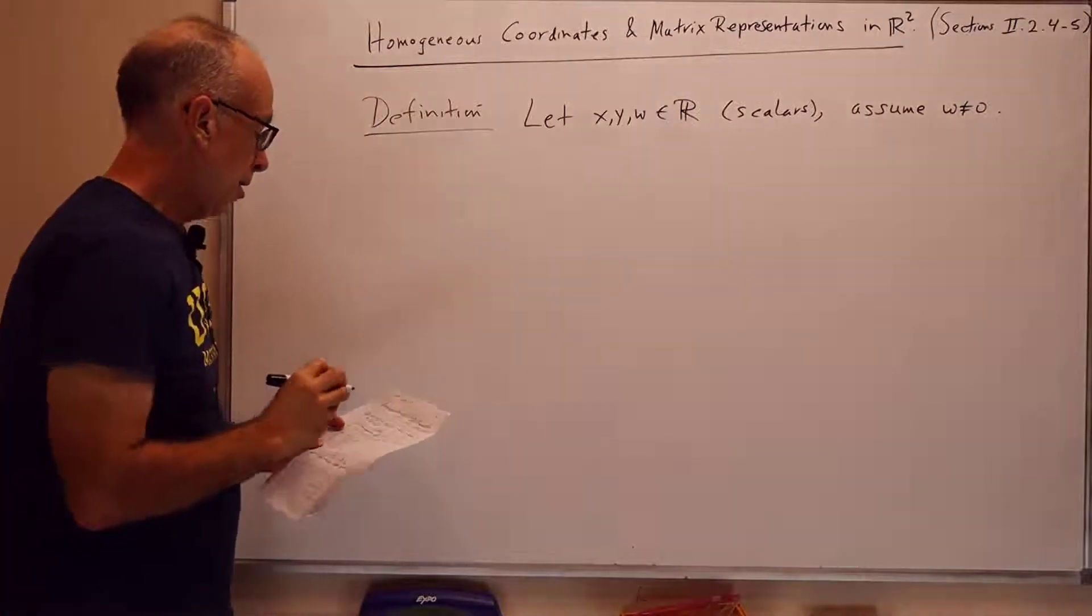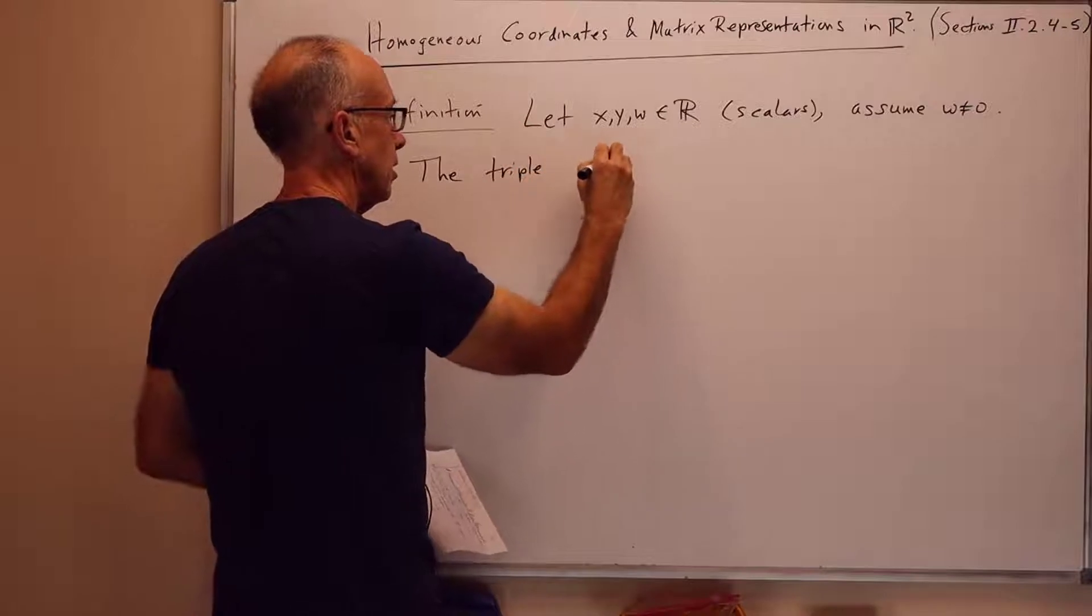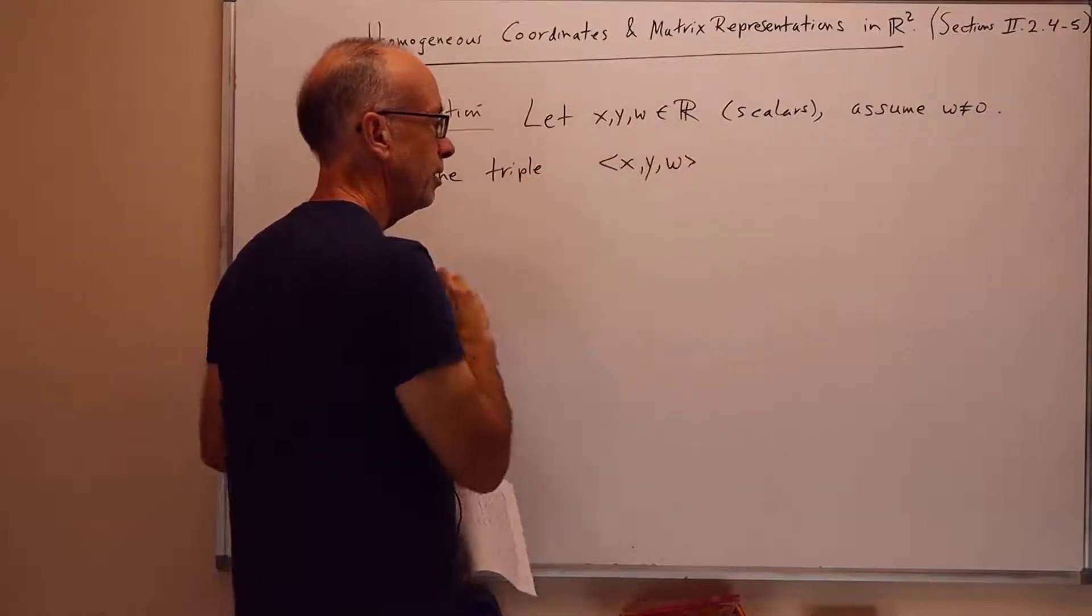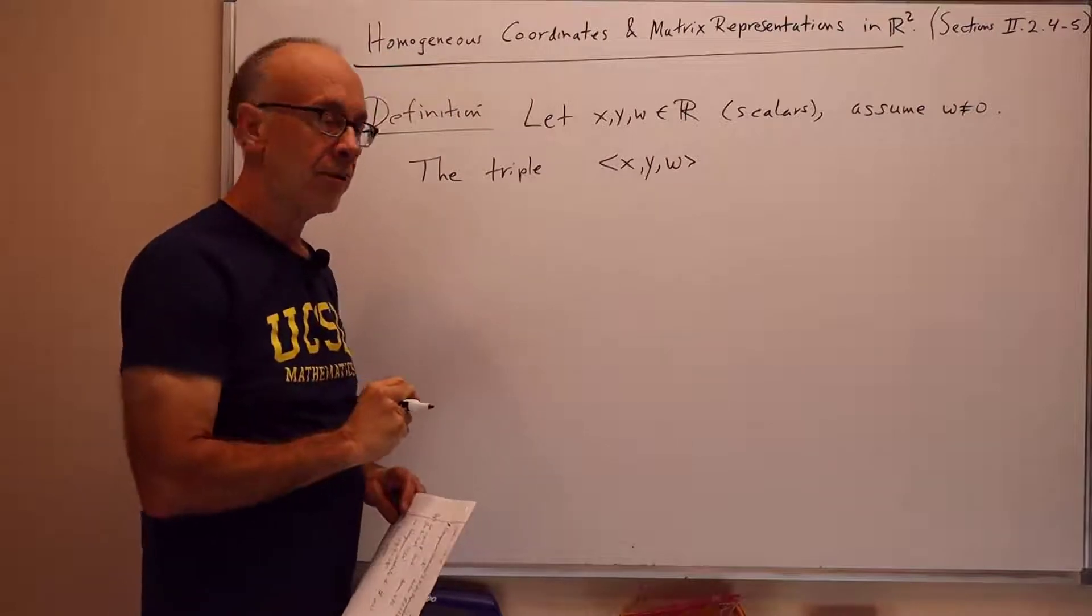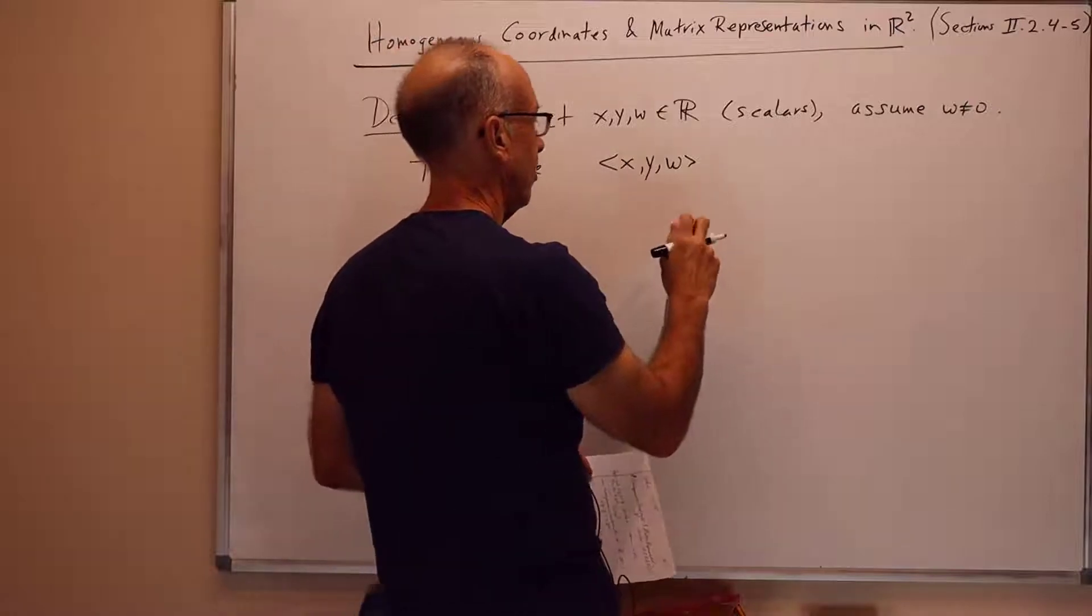And then the triple of values x, y, w. And I write this with angle brackets, which of course usually means a 3 by 1 column vector, but I'm not going to write column vectors. I'm going to use the row notation with angle brackets to stand for column vector.